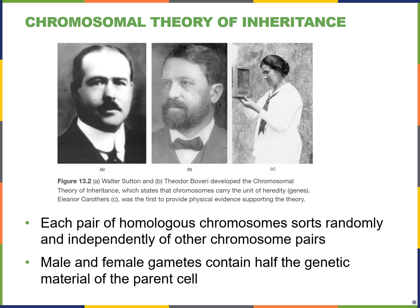After Gregor Mendel's findings, several other scientists came about to develop the chromosomal theory of inheritance, which really supported his findings. Walter Sutton and Theodore Bovary started this theory, and Eleanor Carruthers, shown on the right, really provided physical evidence supporting the theory.